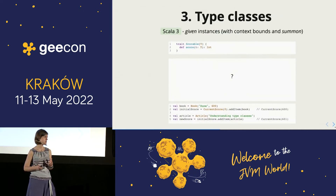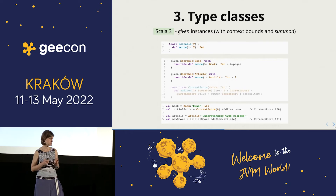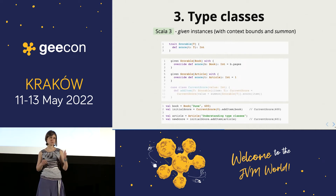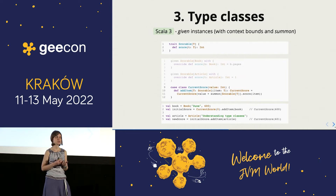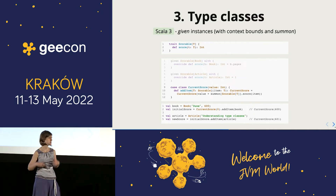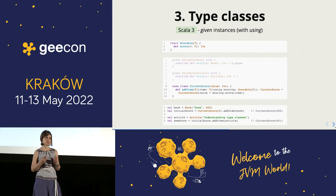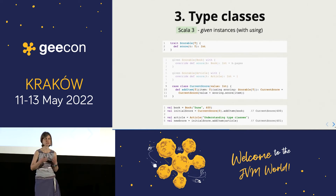You can have similar two ways in Scala 3: using context bounds with summon, or using an explicit parameter list with the using keyword — everything else is the same. So that's how you define type classes in Scala 3.